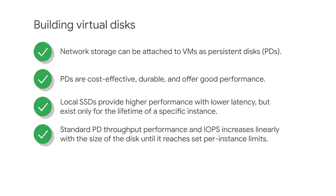The write limit also depends on the size of input-outputs, or IOs. For example, 16 kilobyte IOs consume more bandwidth than 8 kilobyte IOs at the same IOPS level. Standard persistent disk IOPS and throughput performance increase linearly with the size of the disk until it reaches set per-instance limits. The IOPS performance of SSD persistent disks depends on the number of vCPUs in the instance in addition to disk size.